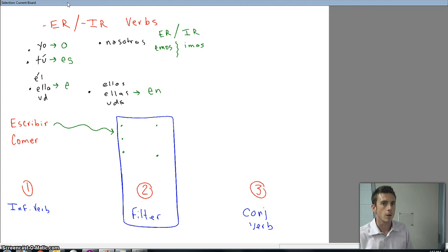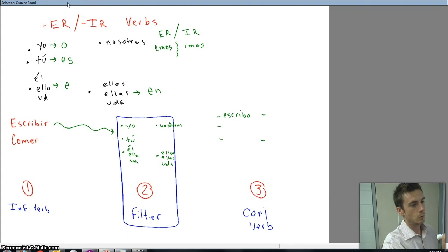So we take ESCRIBIR. What do you think is going to be our first conjugation of ESCRIBIR? Well, here is our filter. So what do you think the first conjugation of ESCRIBIR is going to be over here? Well, if you guessed ESCRIBO, you were right. The TÚ form of ESCRIBIR will become ESCRIBES. The EL, ELLA, USTED form will be ESCRIBE. The NOSOTROS form ESCRIBIMOS. Remember IR verb? It's IMOS. And then the ELLOS, ELLAS, USTEDES form will be ESCRIBEN.